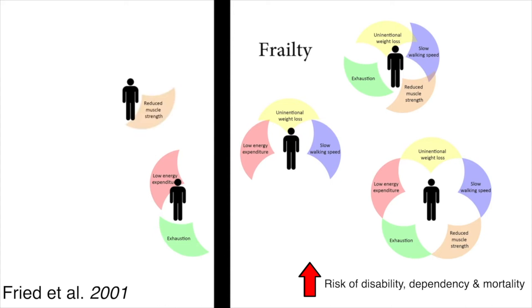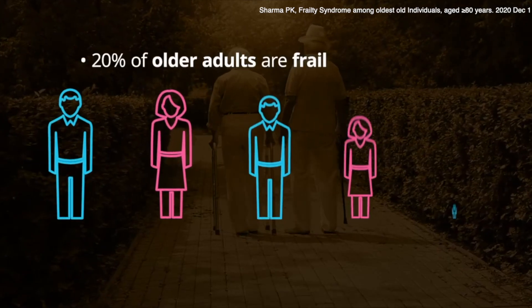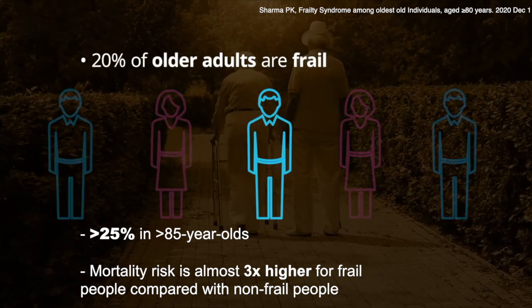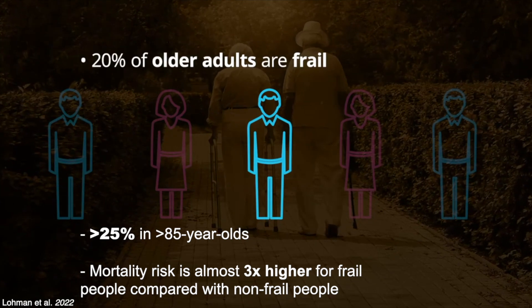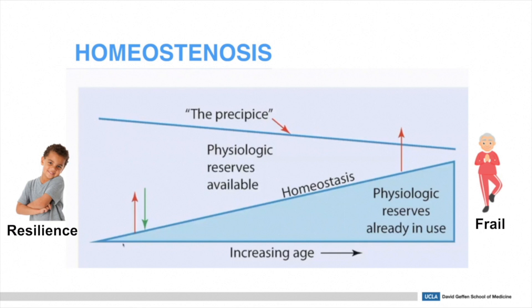People with one or two of these criteria can be scored as pre-frail. This is based on analysis indicating that this group was different in terms of risk of disability and death compared to both frail and robust groups. It's estimated that at least 20% of older adults are frail, and over a quarter of those over the age of 85 meet this criteria. Mortality risk is almost three times higher for frail people when compared with their non-frail counterparts. At the opposing end of this biological health spectrum lies resilience, which is the capacity to withstand stressors.